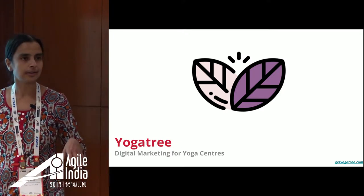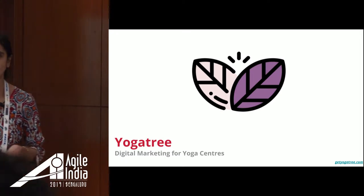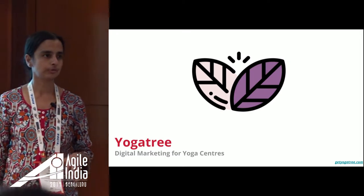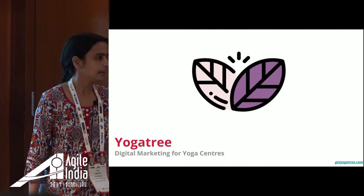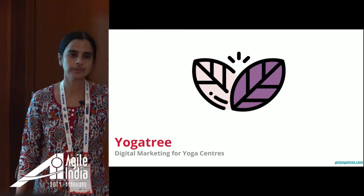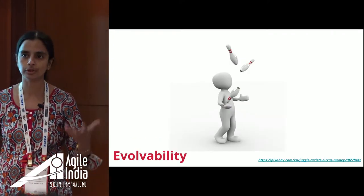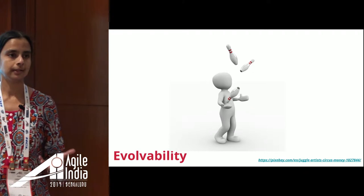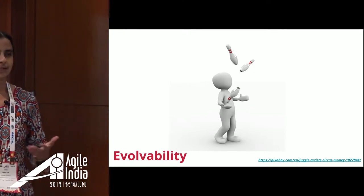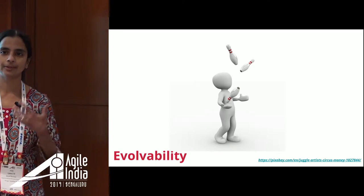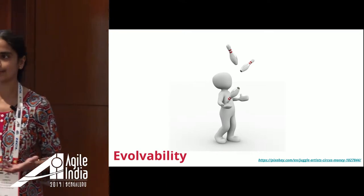Just a quick introduction. I am a co-founder of a company called Yogatree. It's a digital marketing product for yoga studios. We started this a few years back. One of the things I really struggle with — if you have worked on a product company, especially a startup — is that it evolves. It's about evolvability. How do you support that for the product?